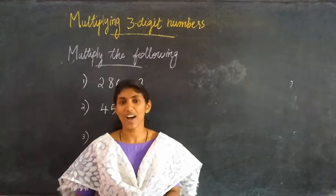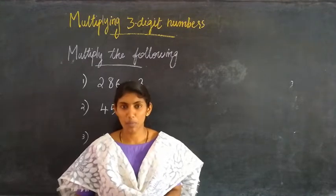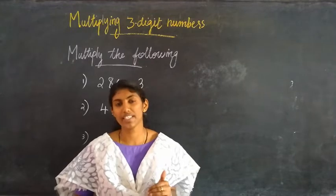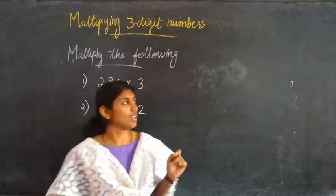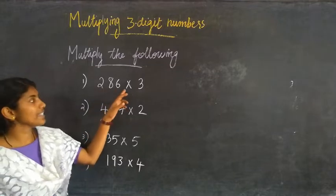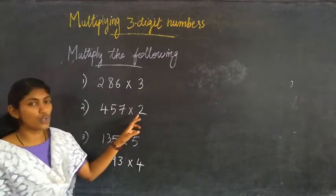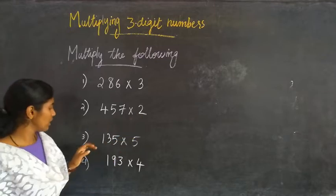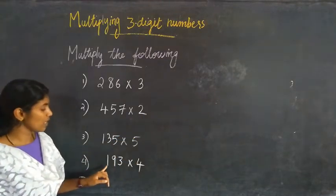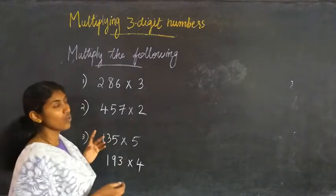Good morning dear students, welcome to mathematics class. Today's first topic is multiplying three-digit numbers. We will see how we are multiplying three-digit numbers by a one-digit number. The questions are: first, 286 into 3; second, 457 into 2; third, 135 into 5; and fourth, 193 into 4.